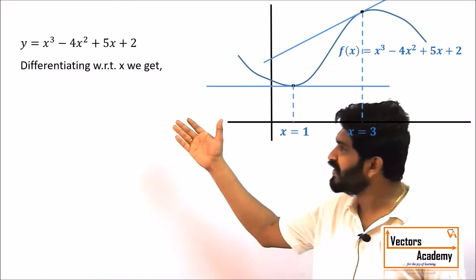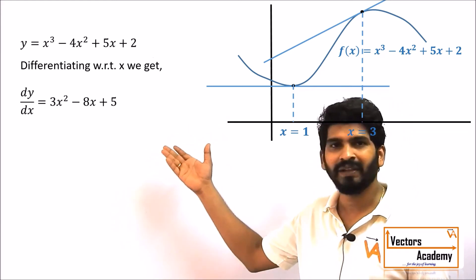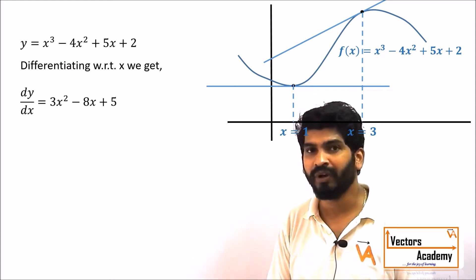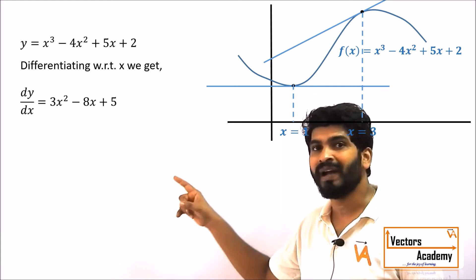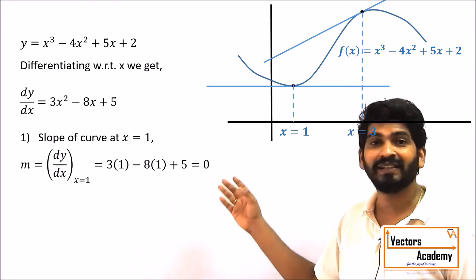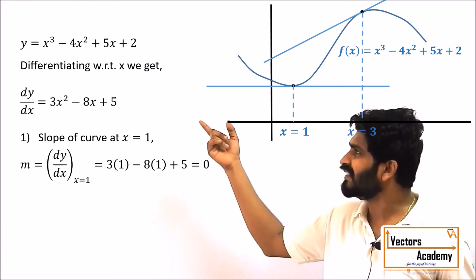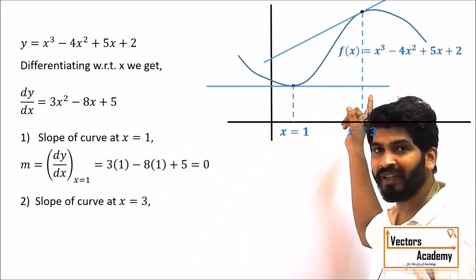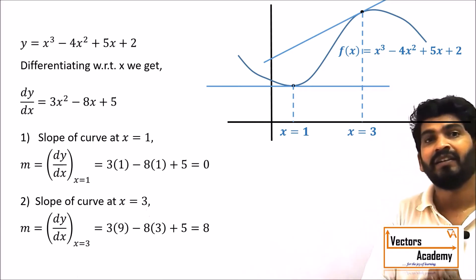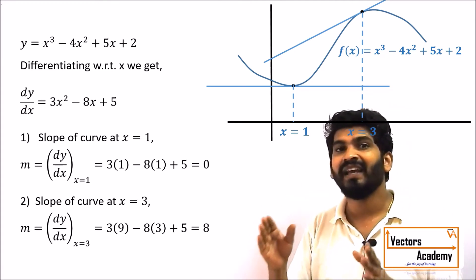Differentiating the equation with respect to x gives dy/dx = 3x² − 8x + 5. This is the general slope at all points. Substituting x = 1, the slope comes out to 0 — confirming the horizontal tangent. Substituting x = 3, the slope of the tangent comes out to 8, which is positive. So the derivative of an equation gives the slope of the tangent at any given particular point.